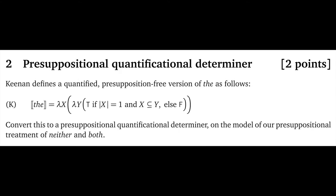Question two: presuppositional quantificational determiner, worth two points. Keenan defines a quantified presupposition-free version of 'the' — this meaning is classic Keenan, where he has packed the presuppositional component into the at-issue meaning as a first conjunct.